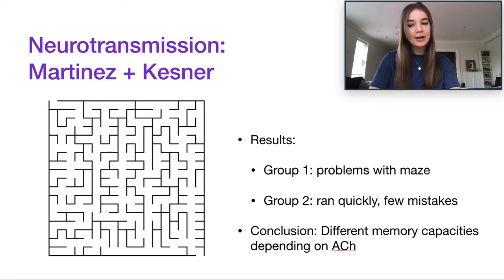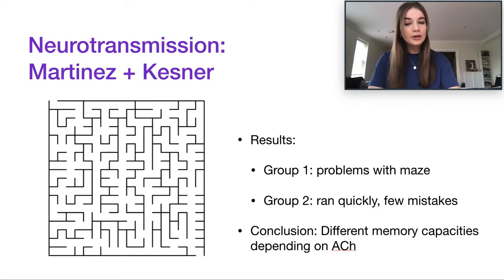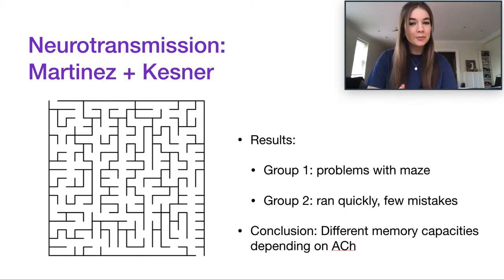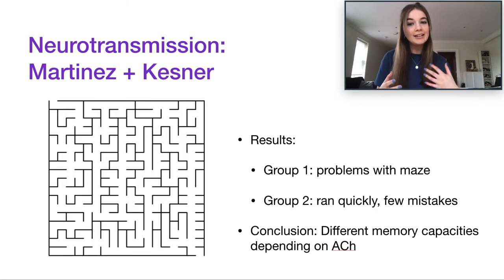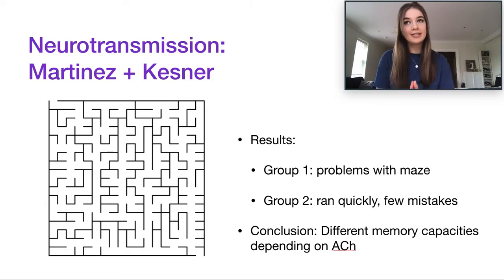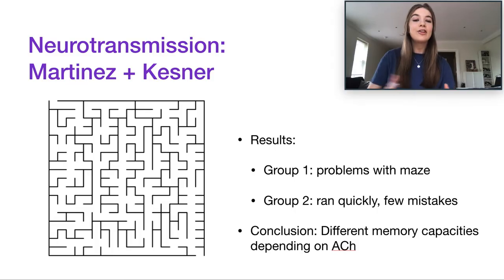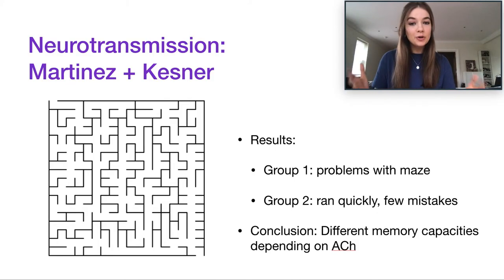This allows us to conclude that memory capacity differs depending on acetylcholine levels. However, we need to be careful with our phrasing — we only looked at rats, so we can't necessarily extend this to humans. It gives us an indication that acetylcholine is involved in memory, but we don't actually know if it works the same in humans. It provides a starting ground, and human studies can then test whether this holds across species.